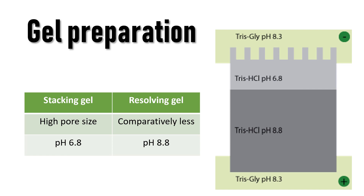The stacking gel has a high pore size that allows the proteins to migrate freely and get stacked between the interface of the stacking gel and the running gel — hence it is named the stacking gel. The purpose of this is to make sure that all the proteins start to migrate from the same level.